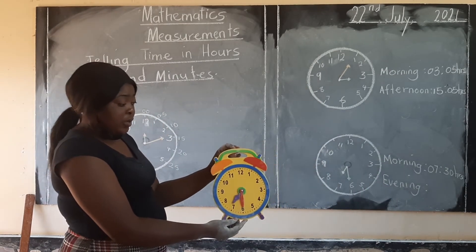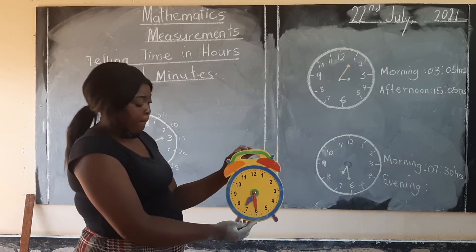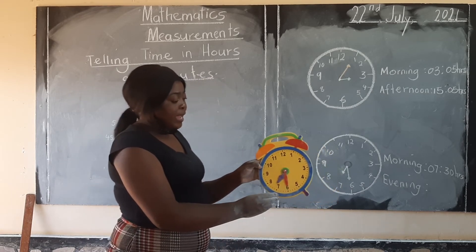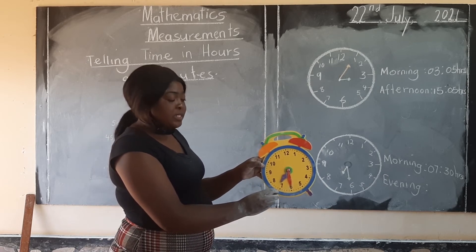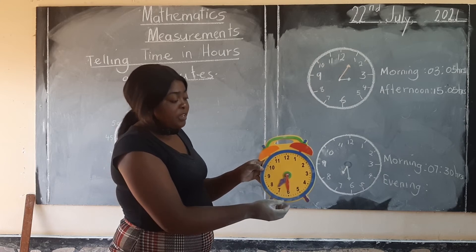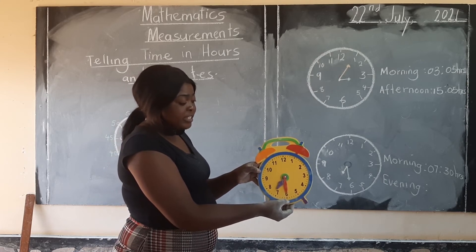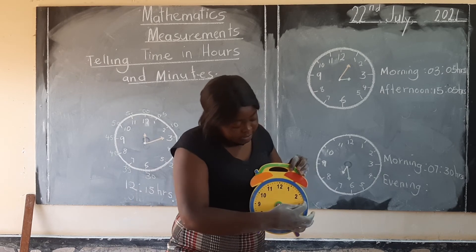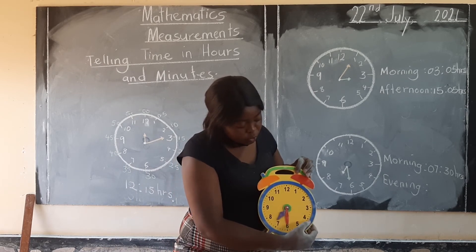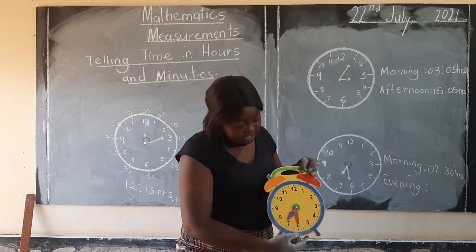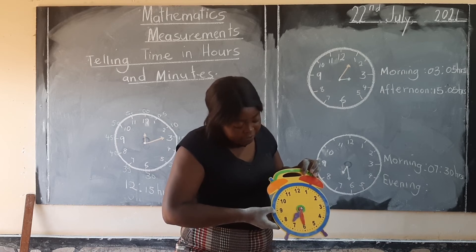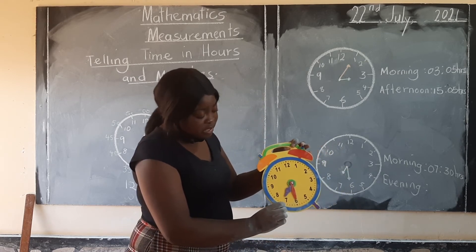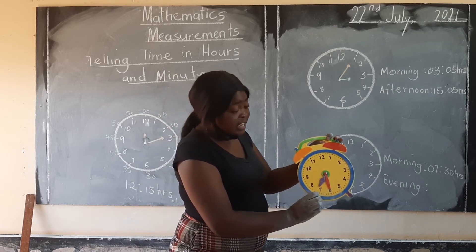In the evening, what time is it? We said if the short hand is pointing at 7, this is 19. And the minutes are: 5, 10, 15, 20, 25, 30. So this time in the evening is 19:30.